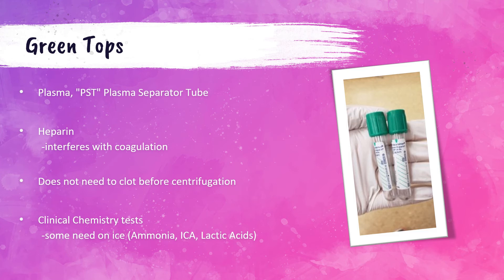Some tests — like ammonia, ionized calcium, and lactic acid — are drawn on green tops and require the specimen to be put on ice to maintain sample stability. An important note: "on ice" does not mean "in ice." You don't actually have to submerge the tube in the ice — you can just place it on top of the ice and that works fine.